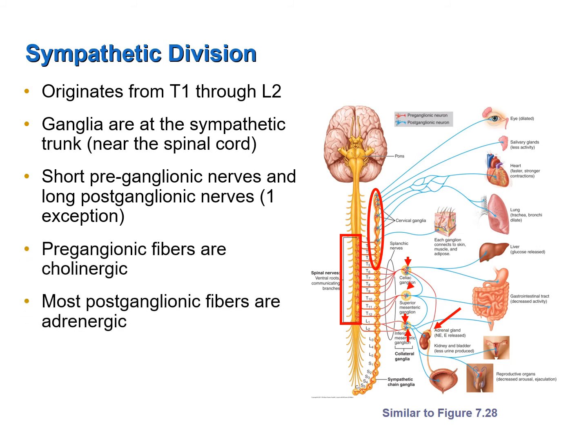The preganglionic fibers release acetylcholine, meaning they are cholinergic, and most postganglionic fibers are adrenergic — meaning they release noradrenaline — although a few do release acetylcholine.